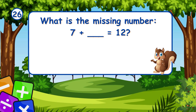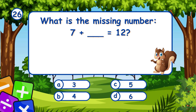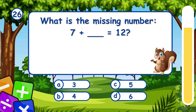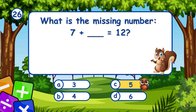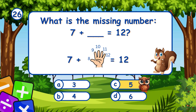What is the missing number? 7 plus something equals 12. It's C, 5. 7 plus 5 equals 12.